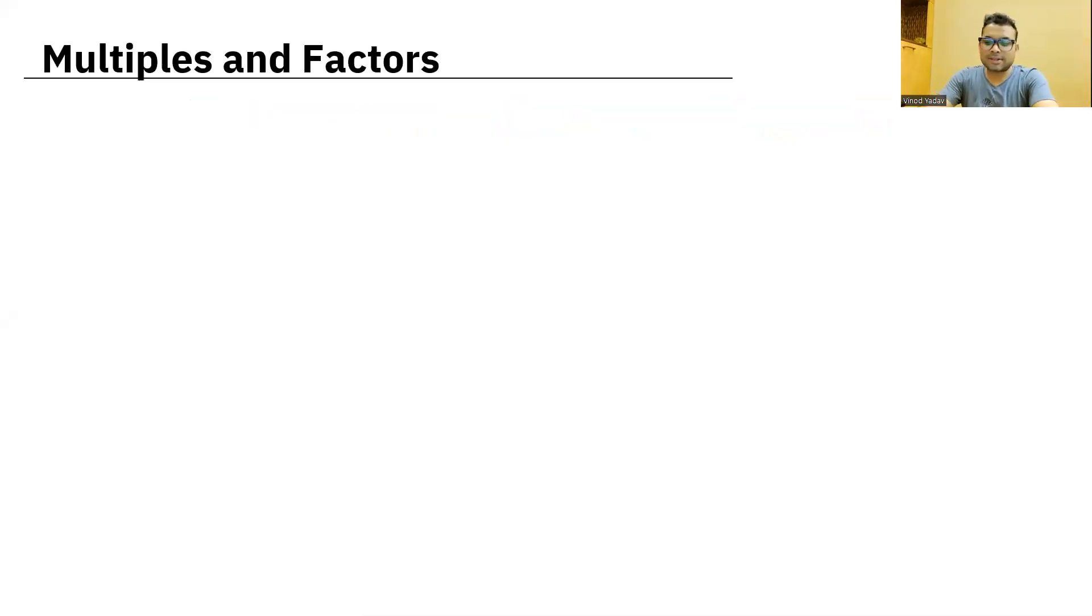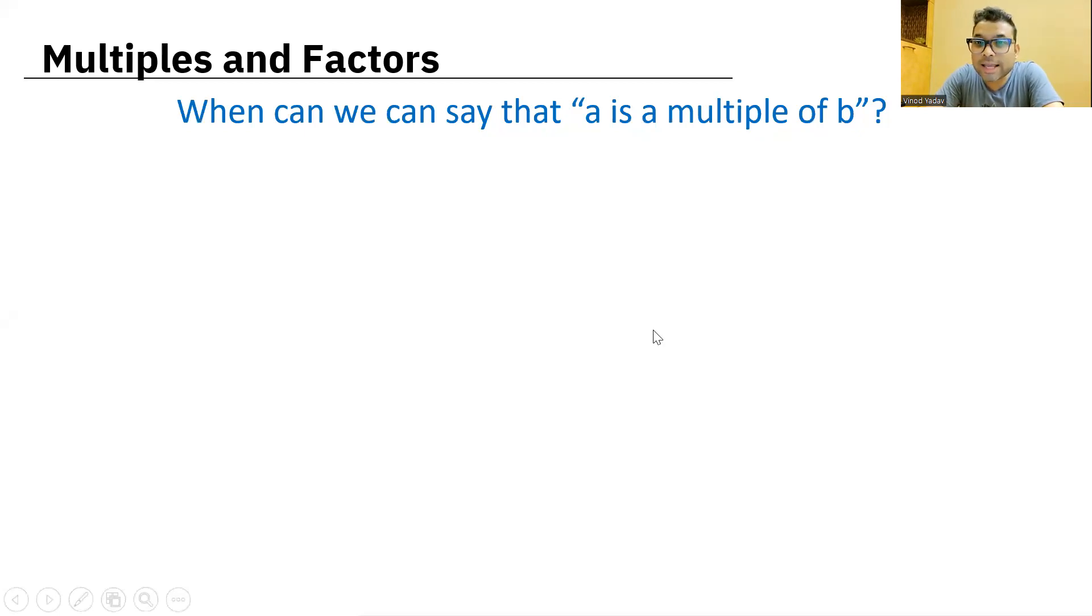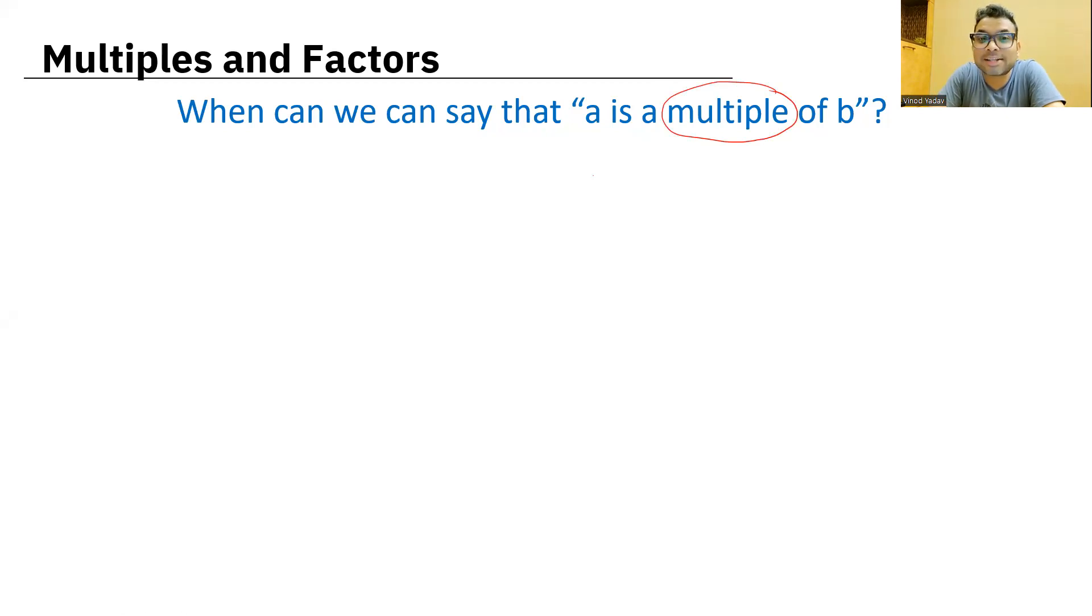So when can we say, we'll understand multiple in greater detail. When can we say that 'a' is a multiple of 'b'? Get very, very familiar and comfortable with this word multiple. The easier word for this is tables. When 'a' comes in the multiplication table of 'b', then we say 'a' is a multiple of 'b'. For example, six is a multiple of two. Why? Because six comes in the table of two, two threes are six. So we can write it like this: a is b times n, where n is some natural number.